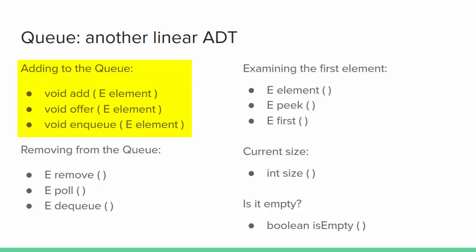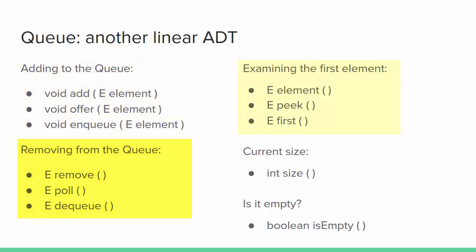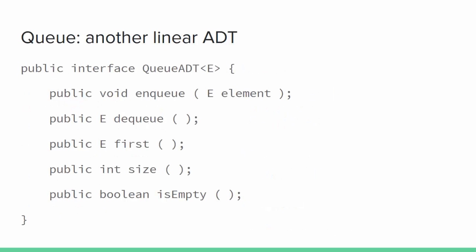Adding an element may be called add, offer, or enqueue depending on who wrote the interface. Removing may be called remove, pull, or dequeue. Looking at the first element may be called element, peek, or first. The Java Collections API specifies a queue interface using two methods for each basic operation, with the difference being the result of trying to access an empty queue — one version throws an exception and the other simply returns null. If we gather a complete set of basic methods we get an interface defining our queue ADT.